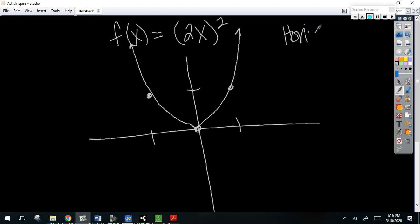What is your A? 2. Does that make it a horizontal shrink or a horizontal stretch? Horizontal. Look at your sheet. If it's bigger than 1, it's a shrink. It's a horizontal shrink.